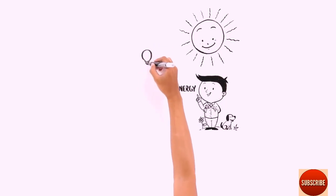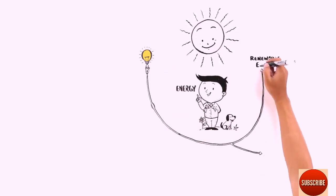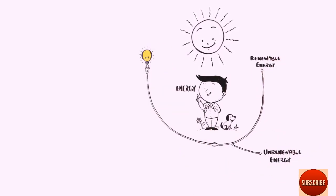At night, electrical energy powers our light bulbs and appliances. There are two kinds of energies: renewable energy and non-renewable energy.